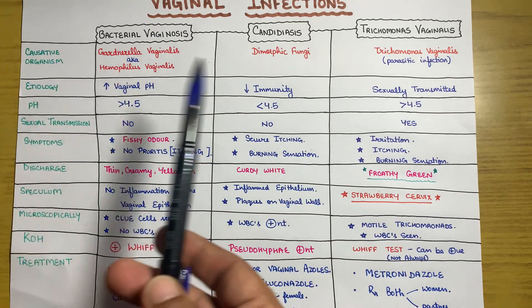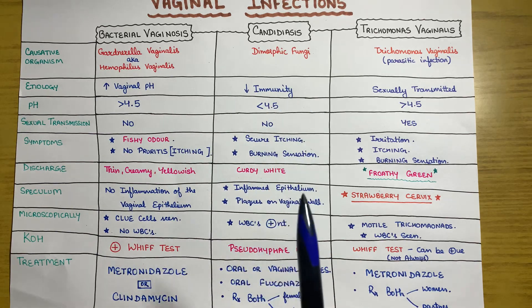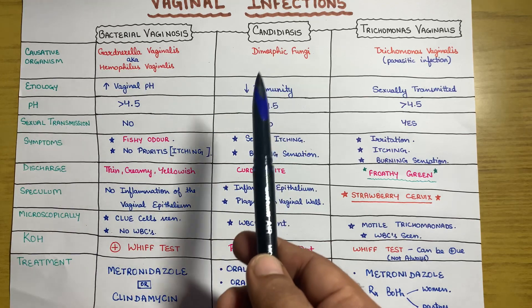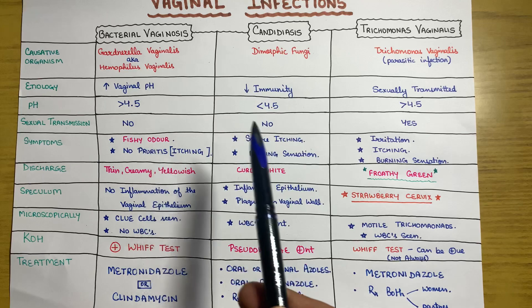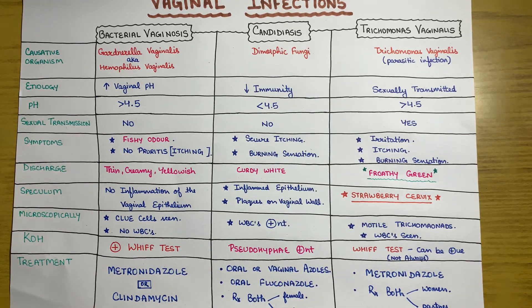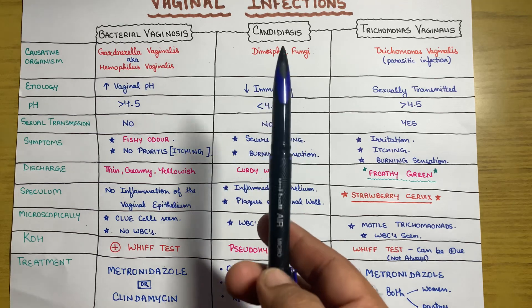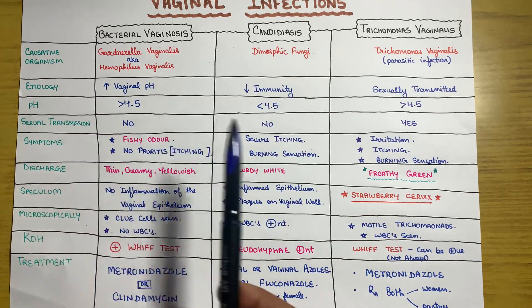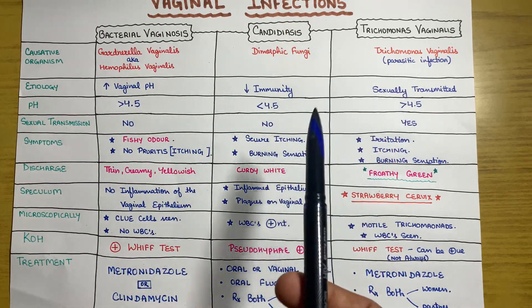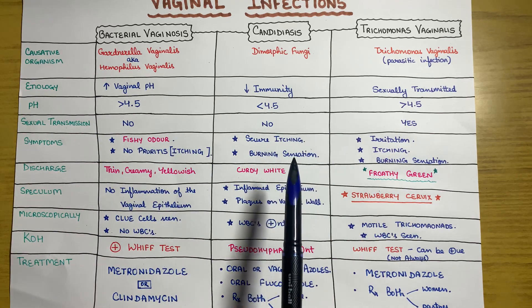Now moving to candidiasis. It is caused by a dimorphic fungus. The etiology suggests that decreased immunity — whenever a person is immunocompromised — can lead to candidiasis infection. The pH in candidiasis cases is less than 4.5, and it is generally not sexually transmitted unless the infection is fully active.